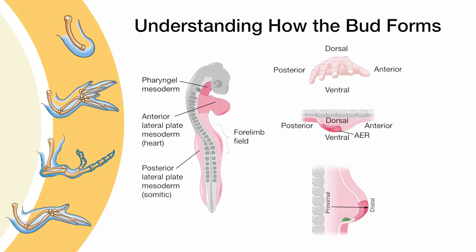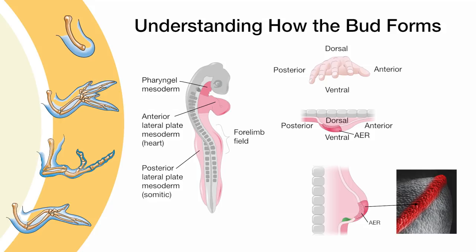The limb bud can also be subdivided into three different parts of significance. The first being a structurally distinct ridge of epithelium, located at the most distal extent of the limb bud, where it perfectly bisects the dorsal and ventral halves of the bud. This structure is called the apical ectodermal ridge, or AER for short. The mass of progenitor cells building underneath the AER is called the progress zone.